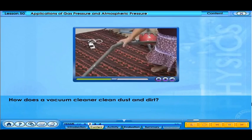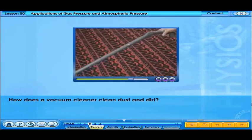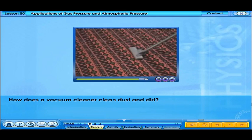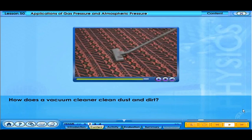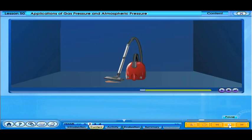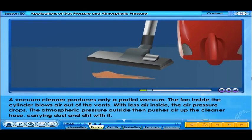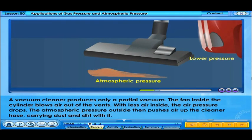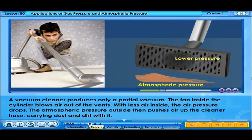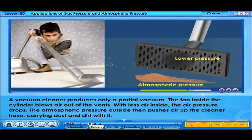How does a vacuum cleaner clean dust and dirt? A vacuum cleaner produces only a partial vacuum. The fan inside the cylinder blows air out of the vents. With less air inside, the air pressure drops. The atmospheric pressure outside then pushes air up the cleaner hose, carrying dust and dirt with it.